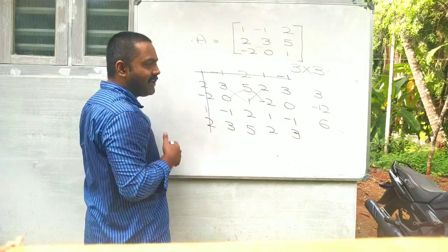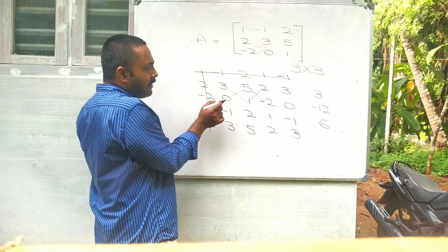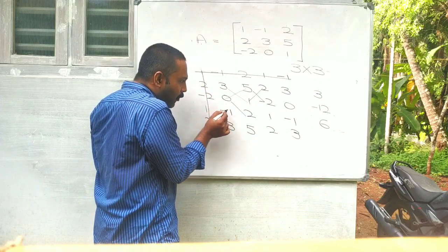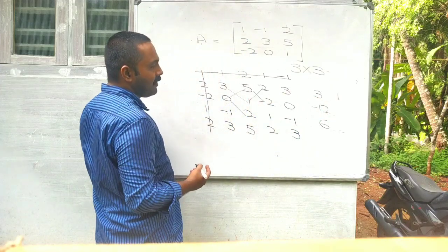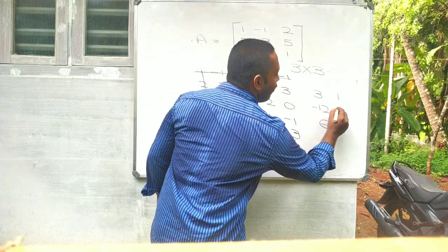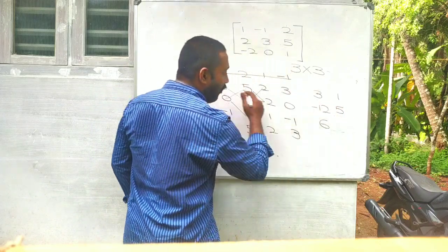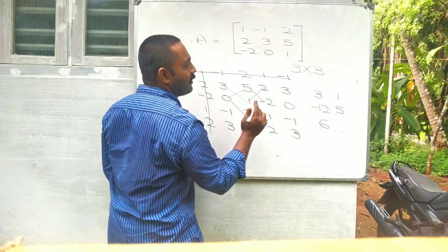0 plus 6, 6. That's all. Column wise. Then 0 plus 1, 1. 1 plus 4, 5. Column wise. 2, 2 minus 0, 2.